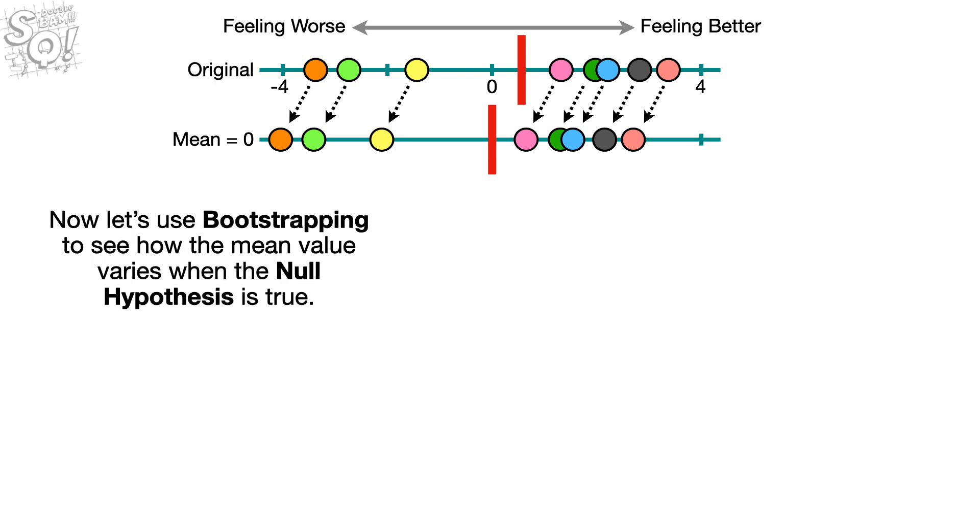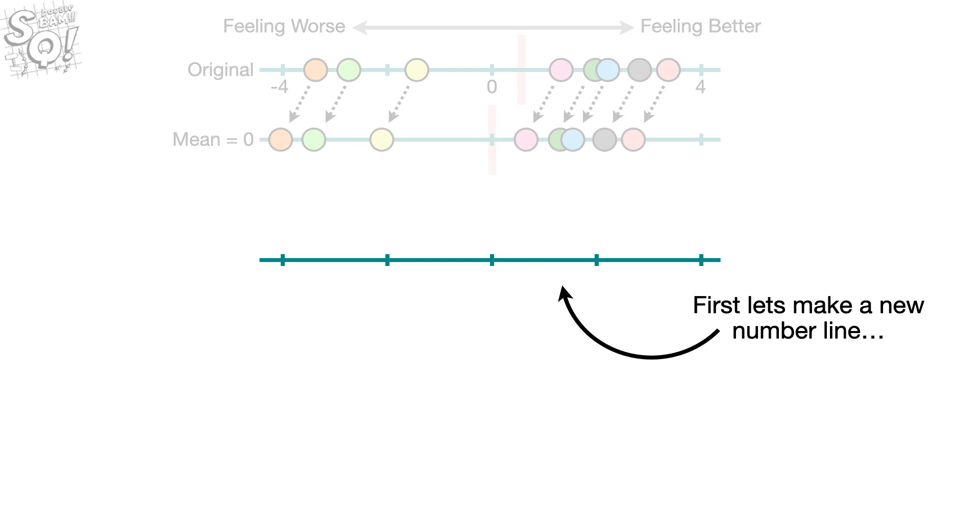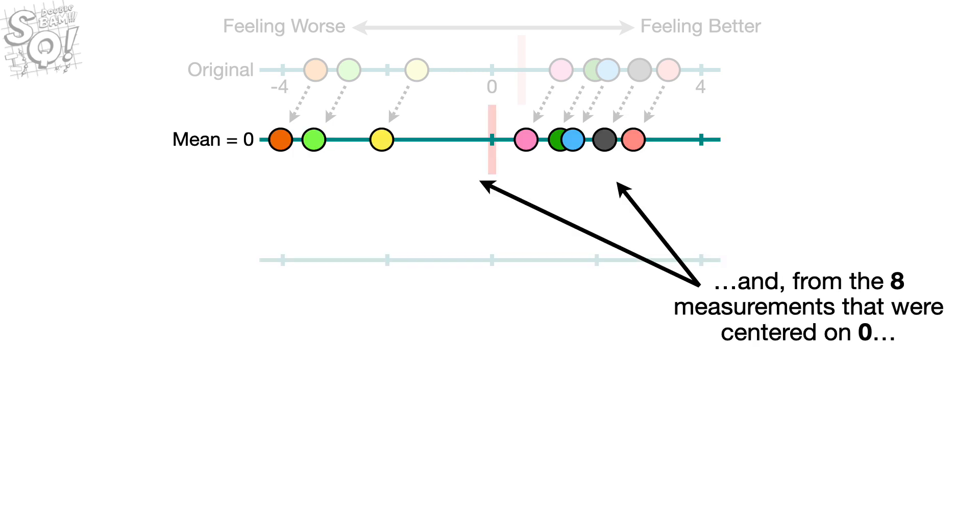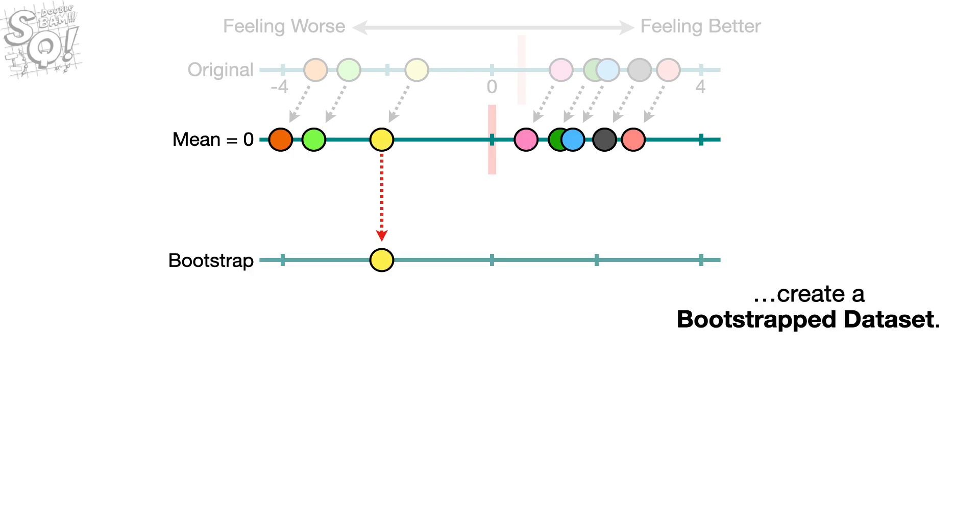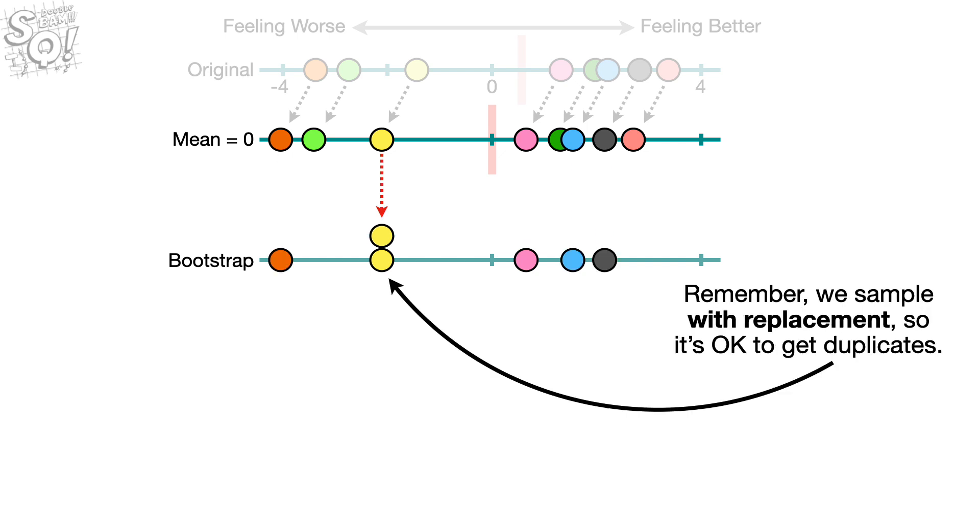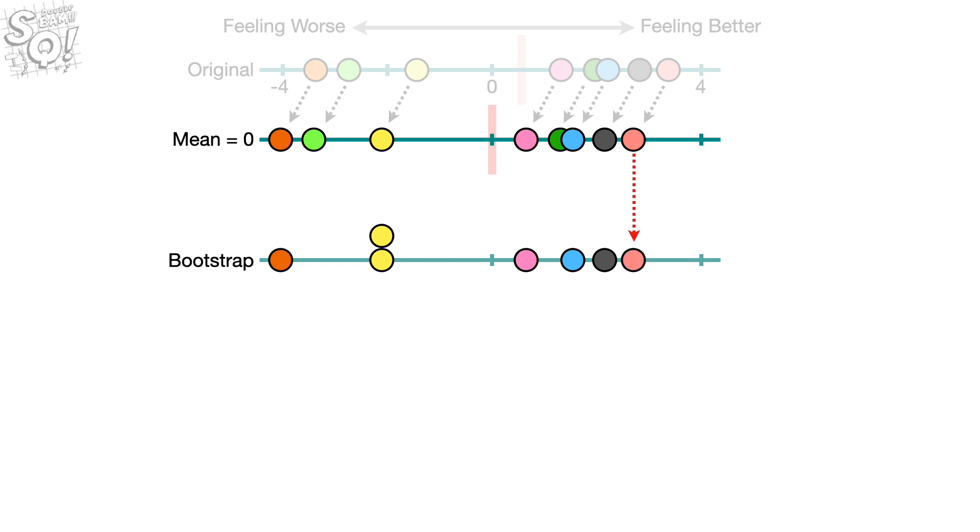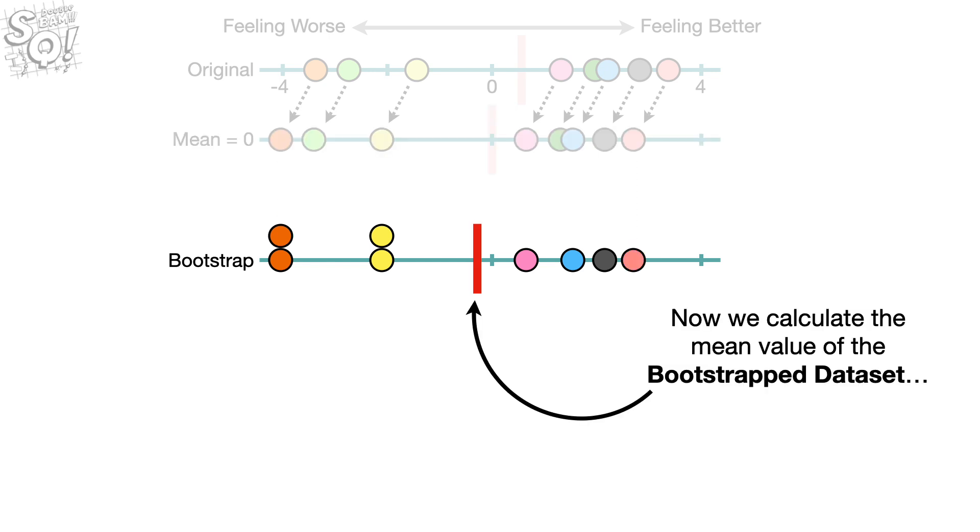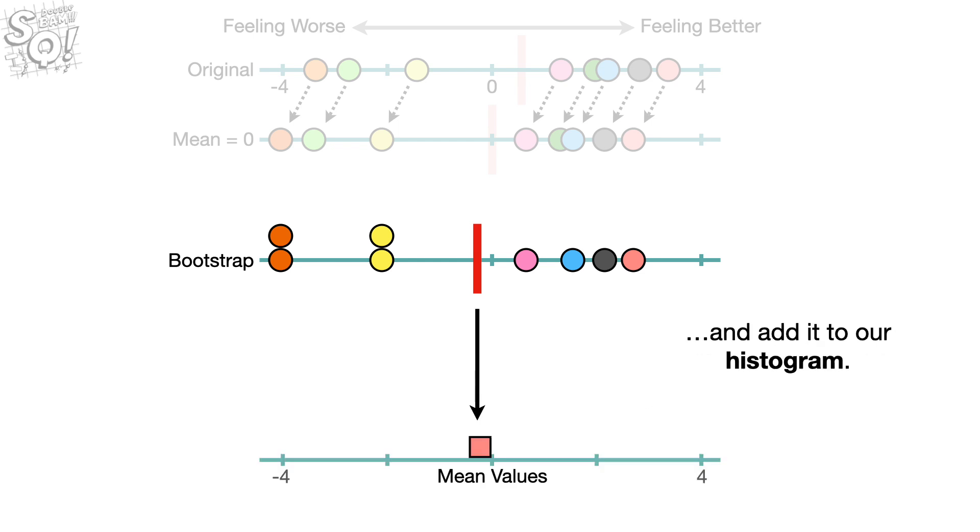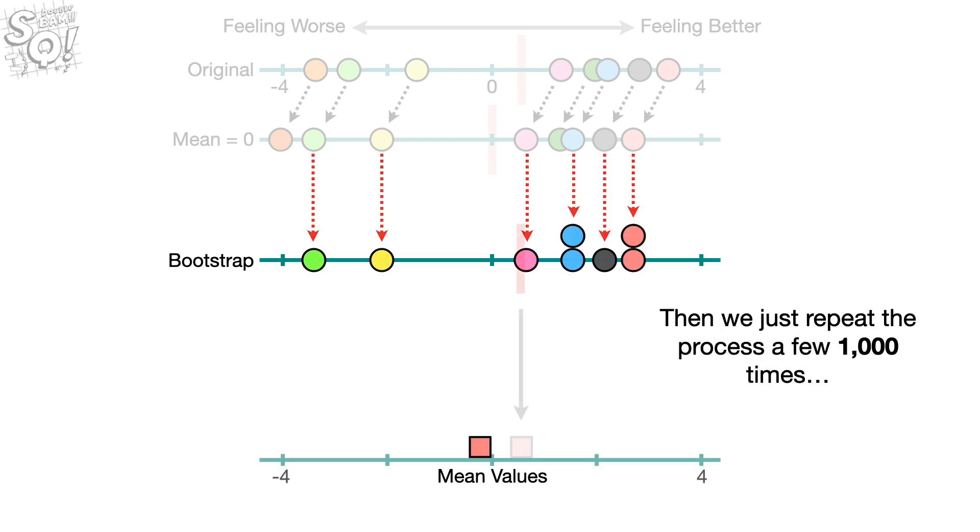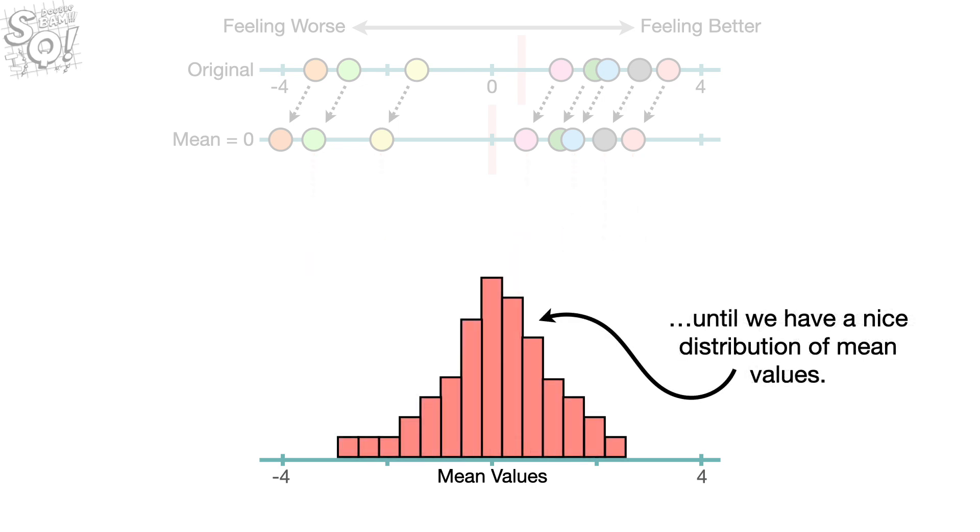Now let's use bootstrapping to see how the mean value varies when the null hypothesis is true. First, let's make a new number line. And, from the eight measurements that were centered on zero, create a bootstrapped data set. Remember, we sample with replacement, so it's okay to get duplicates. Now we calculate the mean value of the bootstrapped data set, and add it to our histogram. Then we just repeat the process a few thousand times, until we have a nice distribution of mean values.